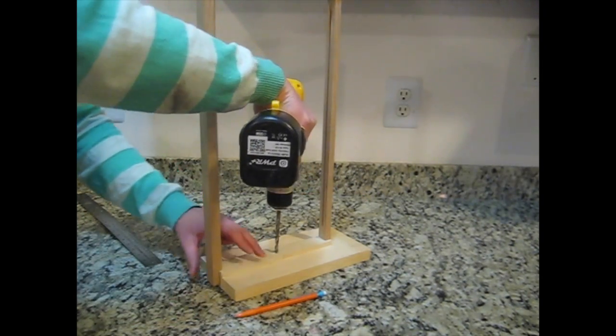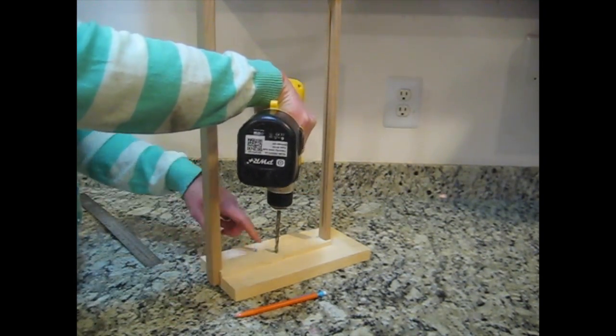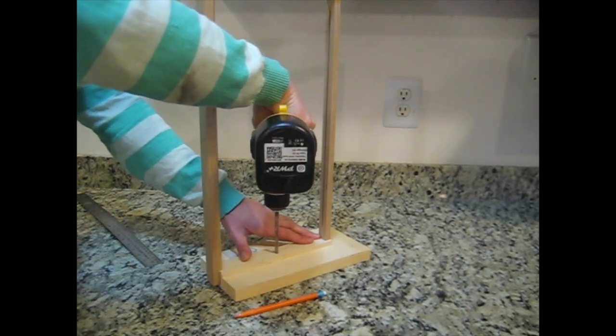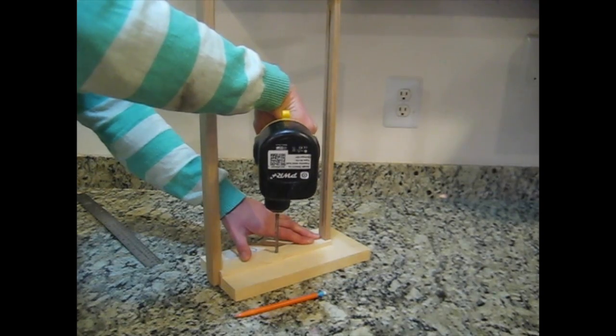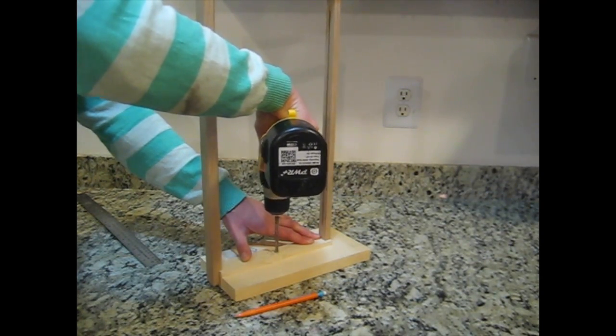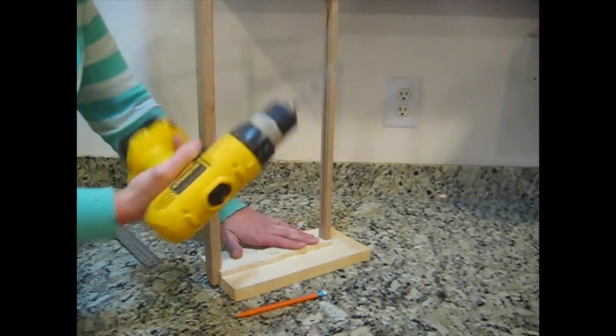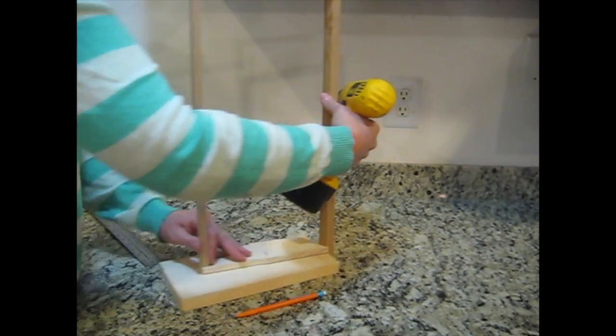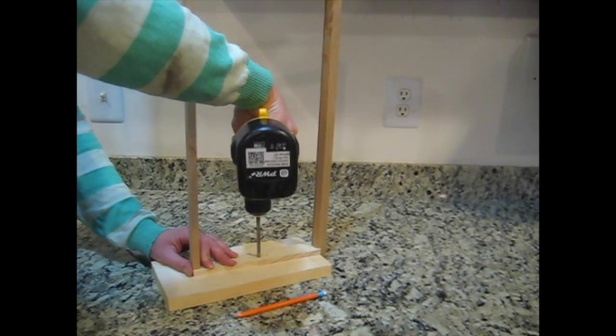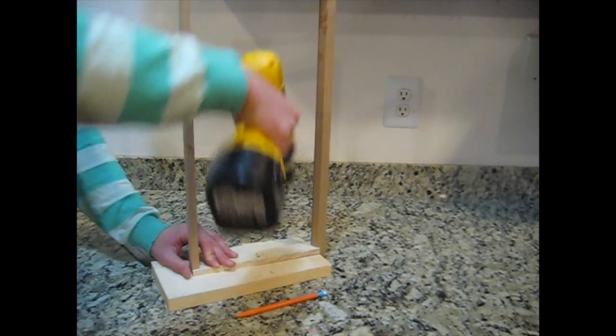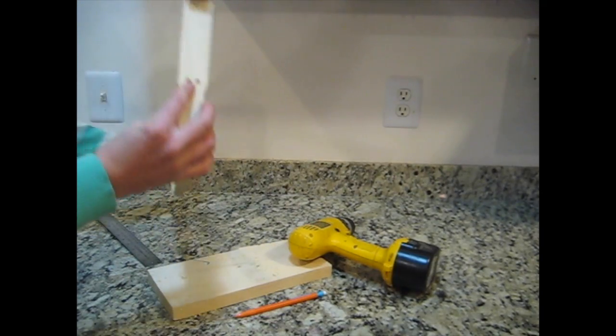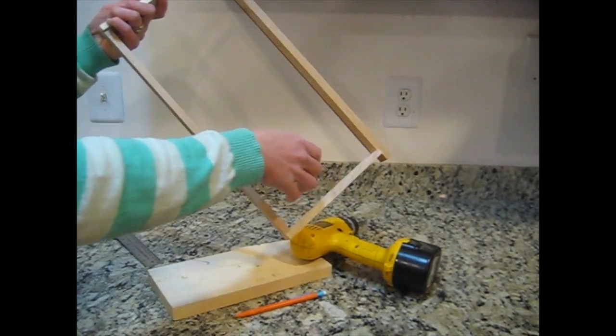I'll put a piece of wood under here, a scrap piece, just to prevent damage to the countertop. And then the other side. So we've repeated that process on the other side so that there are holes, four holes altogether.